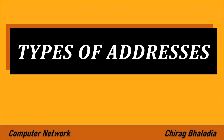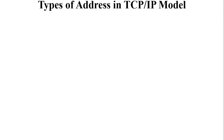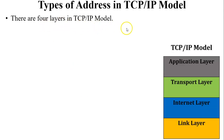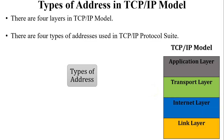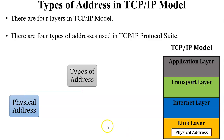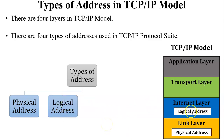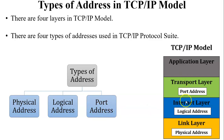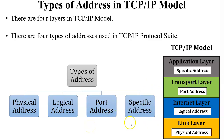Hello friends, welcome back to my channel. In this video I am going to discuss about types of addresses in computer networks. Let us see how many types of addresses are in the TCP/IP model. There are four types of layers in the TCP/IP model: application layer, transport layer, internet layer, and link layer. There are four types of addresses used in the TCP/IP model: physical address at the link layer, logical address at the internet layer, port address at the transport layer, and specific address at the application layer.